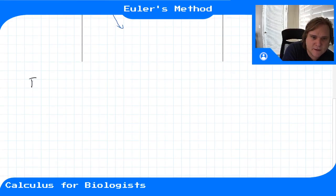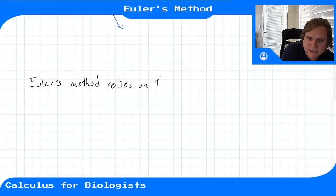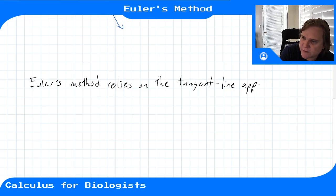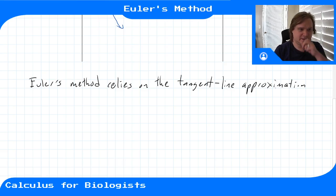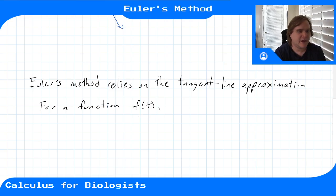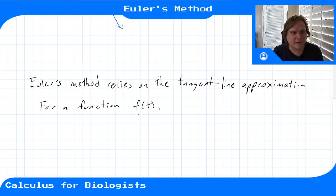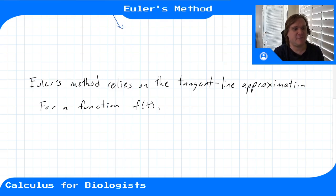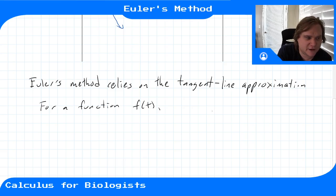Euler's method relies on something called the tangent line approximation. If we have a function f of t and zoom in to a particular point, the tangent line looks almost like the function. Where the function has a certain tangent slope, really close to that point the tangent line is a good approximation of the curve.